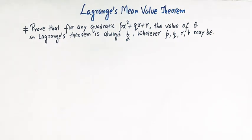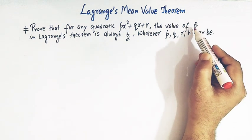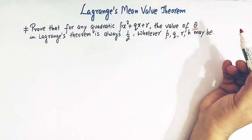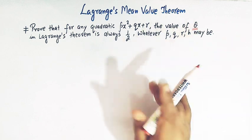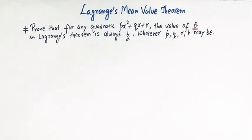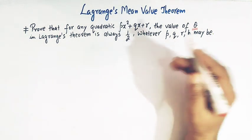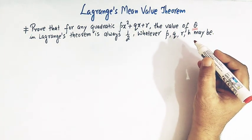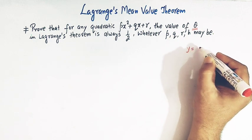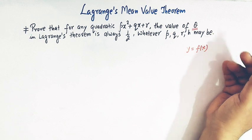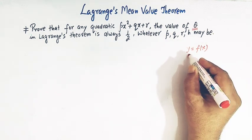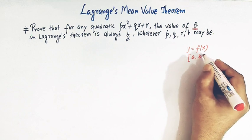So let us first see what this problem is all about. Before taking this problem, let us first take the statement of Lagrange's mean value theorem in terms of this parameter theta, which we are talking about in this problem. We have usually seen that when we define Lagrange's mean value theorem, we take a function y equals f of x and we define this function in the interval a comma b.